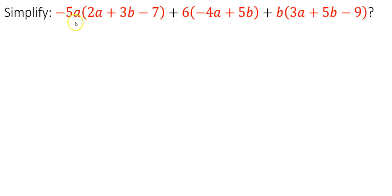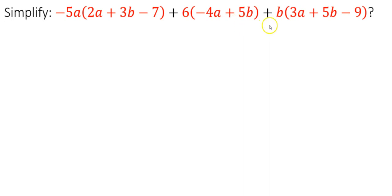The expression is: negative 5a times 2a plus 3b minus 7, plus 6 times negative 4a plus 5b, plus b times 3a plus 5b minus 9.